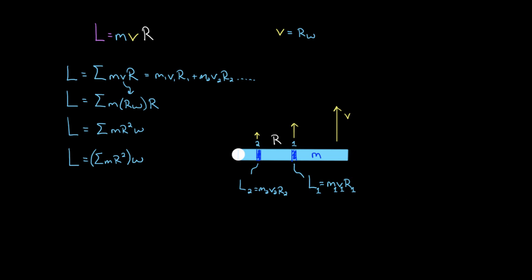This is where the magic happens. Look at what you've got: the sum of all the MR² terms. But MR² is the moment of inertia of a point mass, and adding up all the MR² values gives the total moment of inertia I of the entire object. So we've found a very handy formula: the angular momentum of an object is simply L = Iω — the moment of inertia times the angular speed.